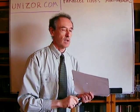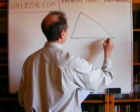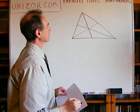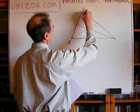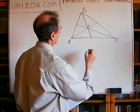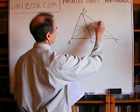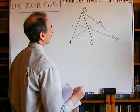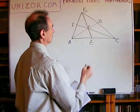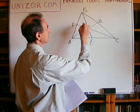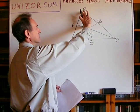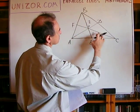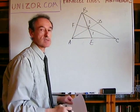And one more theorem: about the medians of a triangle. If you have three medians — let's call the midpoints D, E, F and the centroid P — the point where the medians intersect divides each median in a two-to-one ratio. The piece closer to the vertex is twice as big as the one closer to the opposite side.